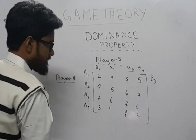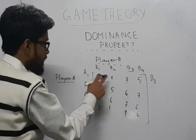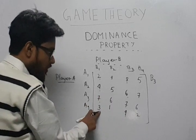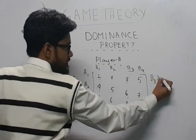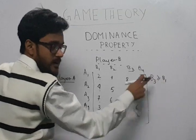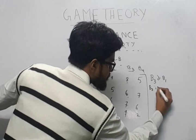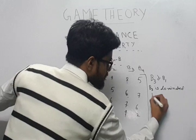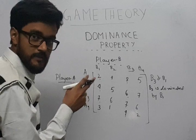The column B3 is either greater than or equal to column B1. As you can see, this is greater than this, this is greater than this, or it is equal - see 7 equals to 7. So when B3 is greater than or equal to B1, we say B3 is dominated by B1.